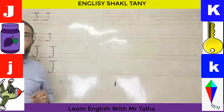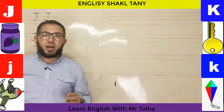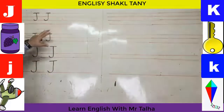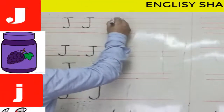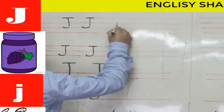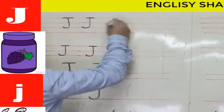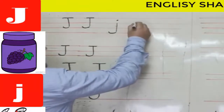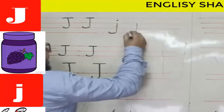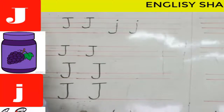Now let's see how to write the lowercase j on four lines. I tell my child to start at the second line, go to the fourth line, curve it at the bottom, and put a dot here. Again: start at the second line, go to the fourth line, curve at the bottom, then a dot.